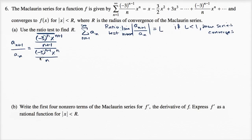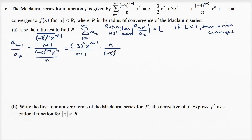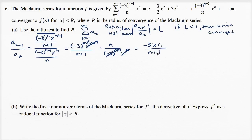So what does this simplify to? We multiply by the reciprocal of the denominator: negative three to the n times x to the n plus one over n plus one, times n over negative three to the n minus one times x to the n. We can divide numerator and denominator by x to the n — giving x to the first — and by negative three to the n minus one — giving negative three to the first. This all simplifies to negative three x times n over n plus one.